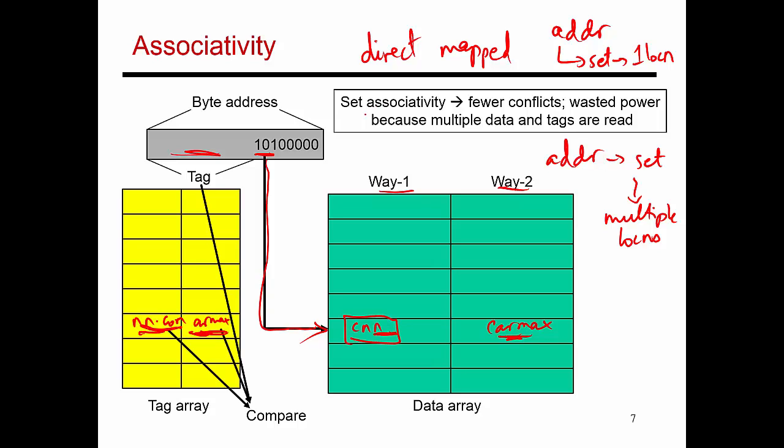With a set associative cache, people have generally observed that you are causing fewer conflicts in the cache because now, if there are two different pieces of data that map to the same set, previously, I was only able to accommodate one of them. But now, with a set associative cache, both of those pieces of data can be co-resident in the cache, and that improves my hit rate. Because of those fewer conflicts, I should see fewer misses.